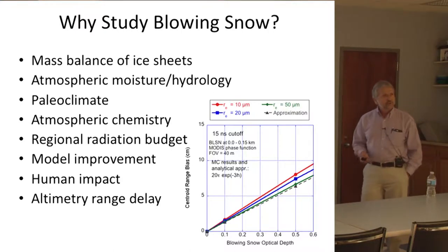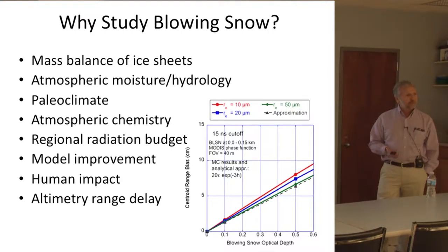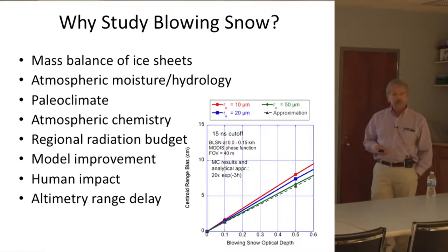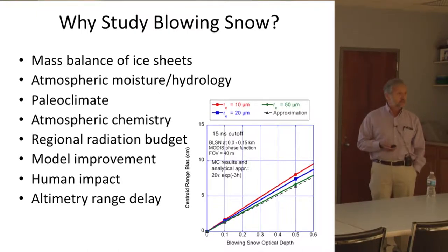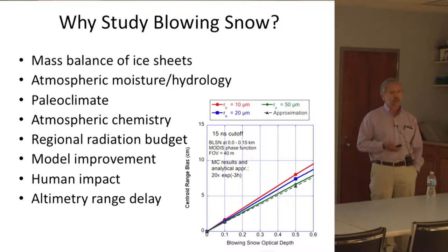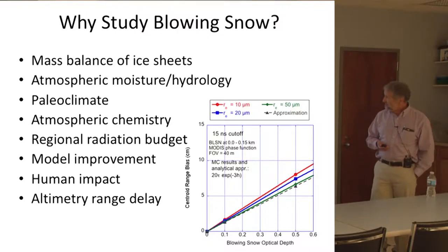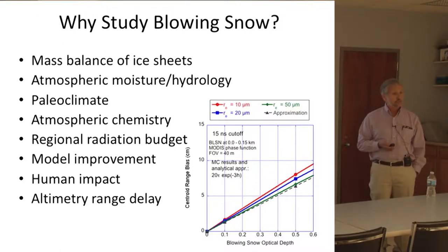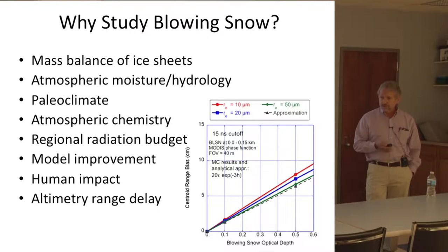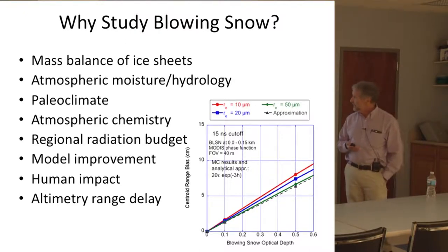Why study blowing snow? When I made up this slide I was impressed that I could come up with eight bullets. The first, probably the most important, is that it's an important part of the mass balance of ice sheets — both the transport and sublimation terms are part of the mass balance equation. Aside from precipitation, the sublimation of blowing snow is the largest term. It's also important in the atmospheric moisture and hydrology cycle.